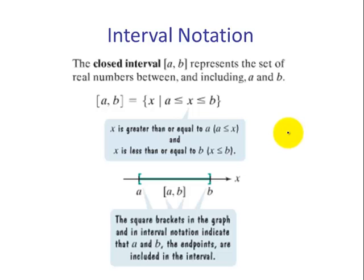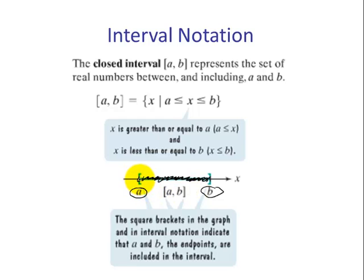A closed interval: we're looking between two values A and B and we want all numbers in between. This time it can equal A and it can equal B, so on the number line these would be solid circles. In inequality notation, we include an equal sign for both parts. In interval notation, when a value can be included, we use the closed bracket.